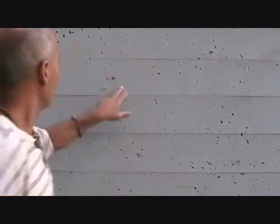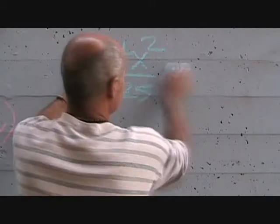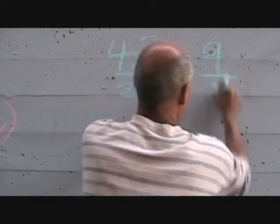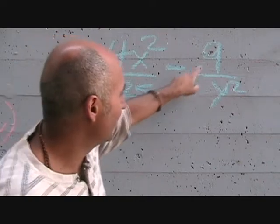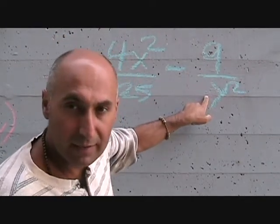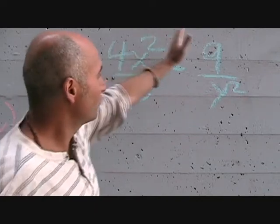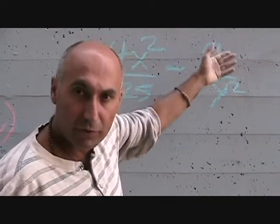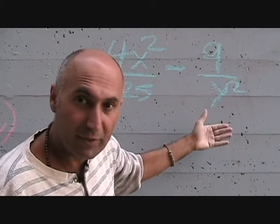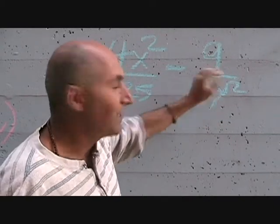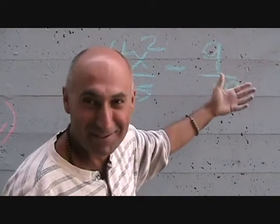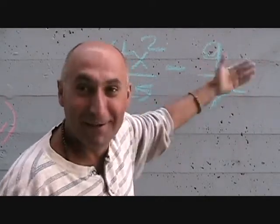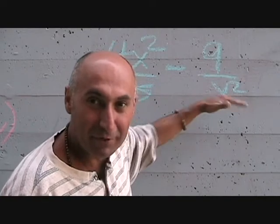Fractions work the same way. We've got 4x squared divided by 25 minus 9 divided by y squared. When you take the square root of a fraction, all you do is take the square root of the top and the square root of the bottom — the bottom stays where it is. Some people mistakenly move the denominator to the top, but whatever you're factoring in the bottom stays in the bottom.